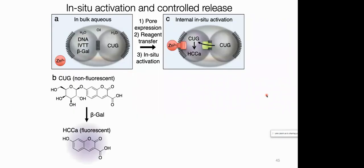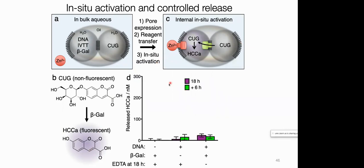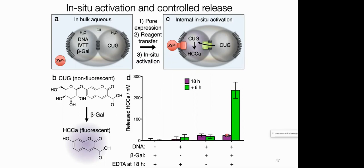We can then do interesting things inside — in-situ activation. We use the molecule coumarin-glucose: it's non-fluorescent until beta-galactosidase cleaves it and forms fluorescent coumarin. We do this reaction inside without releasing until we want to release using EDTA. Without DNA, nothing gets released. With DNA, there's a small amount. With DNA and beta-galactosidase, a little bit being released. When we add EDTA, we get a nice, significant release compared to the background — showing we can controllably do a reaction inside these multi-compartment structures without releasing anything until we choose to.